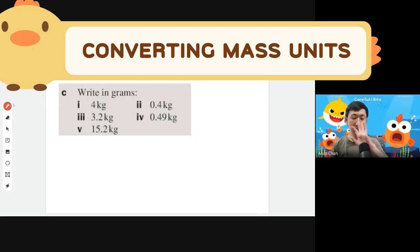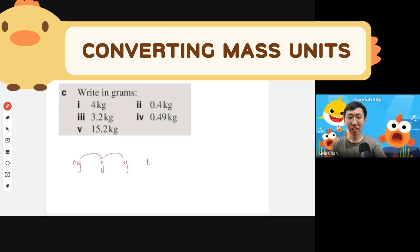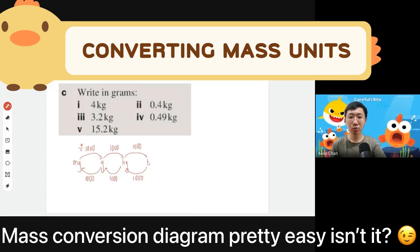Now for mass conversion. Draw the conversion diagram starting from the smallest unit: milligram, gram, kilogram, and ton. Draw arrows for ton to kilogram, kilogram to gram, and gram to milligram. All conversion factors are 1000. Going from smaller to bigger unit is divide; going from bigger to smaller is multiply.